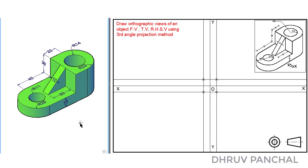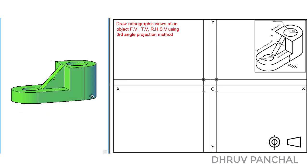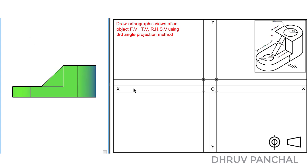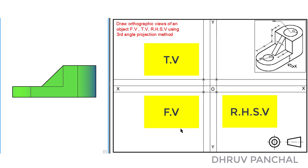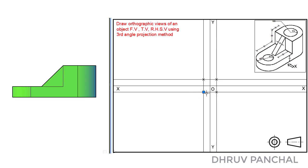To solve this problem, let us observe the front view of the given 3D object with respect to the direction of view. As we know, in the third angle projection method, we draw the front view in the third quadrant, the top view above the front view, and the right-hand side view at the right side of the front view. So, we will draw the front view over here.